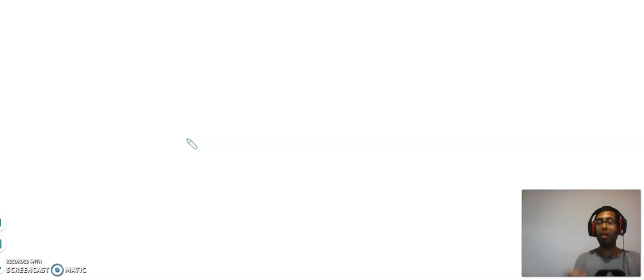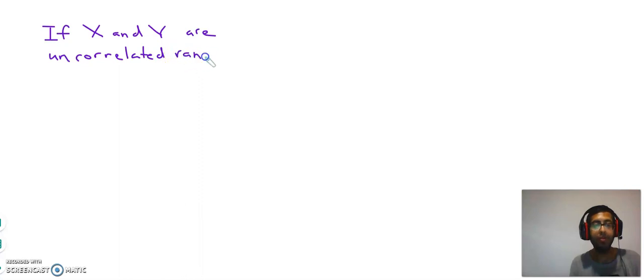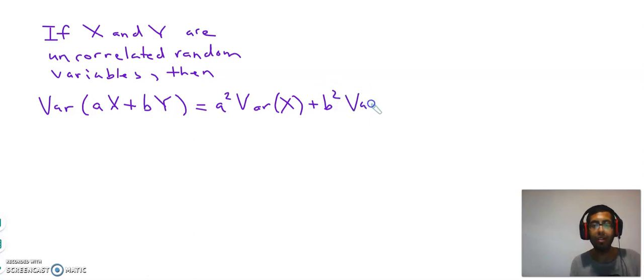Before I show you how to compute it, I have to explain the following result. If x and y are uncorrelated random variables, then the variance of a times x plus b times y is a squared times the variance of x plus b squared times the variance of y.